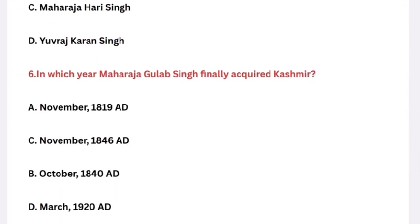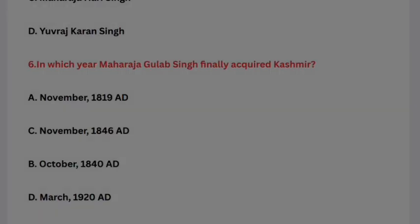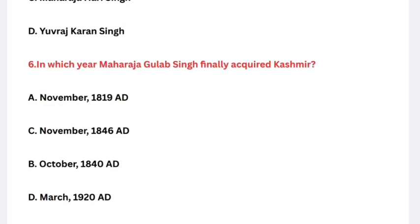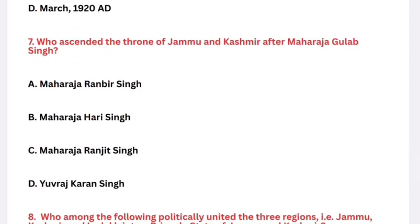Question: Who ascended the throne of Jammu and Kashmir after Maharaja Gulab Singh? Options: Maharaja Rambir Singh, Maharaja Hari Singh, Maharaja Ranjit Singh, Yuvaraj Karan Singh. The right answer is Maharaja Rambir Singh — he ascended the throne after Maharaja Gulab Singh. Question: Who among the following politically united the three regions of Jammu, Kashmir, and Ladakh into the princely state of Jammu and Kashmir? The right answer is Maharaja Gulab Singh, in 1846.